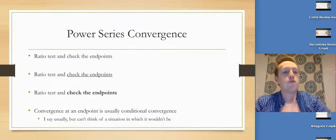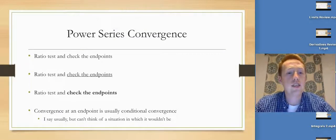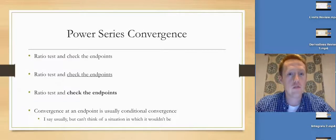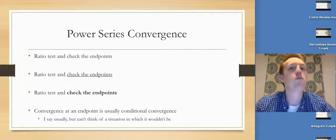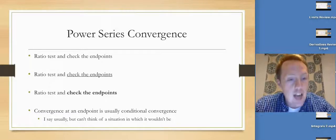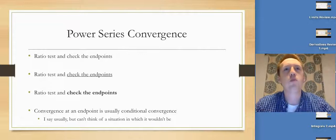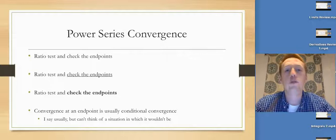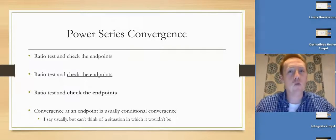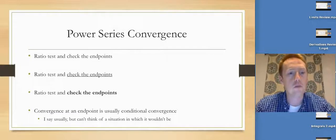Now we're on to power series convergence. The process: ratio test, then check the endpoints. An important idea: if you have convergence at an endpoint, that's conditional convergence. That's useful because if they tell you it's conditionally convergent at, say, five, the distance from the center to that point is your radius of convergence. Anything outside that range is divergent; anything within it is convergent.